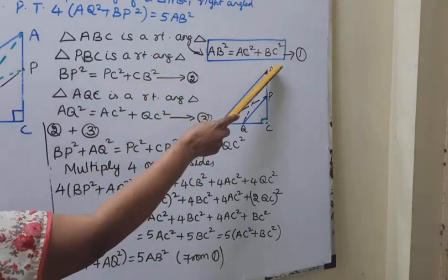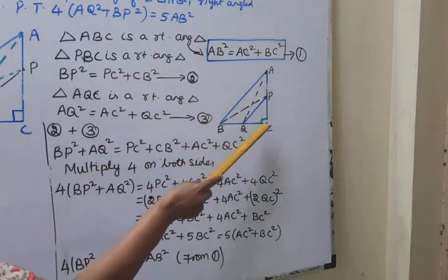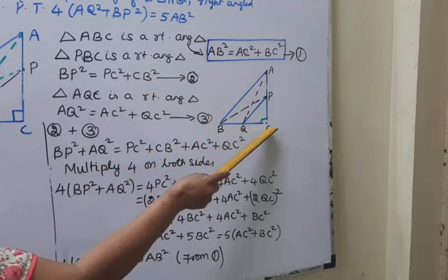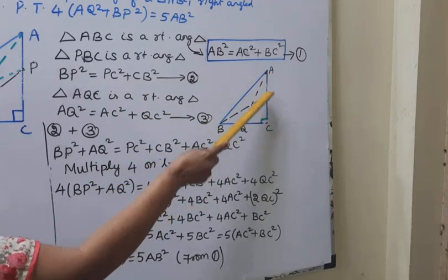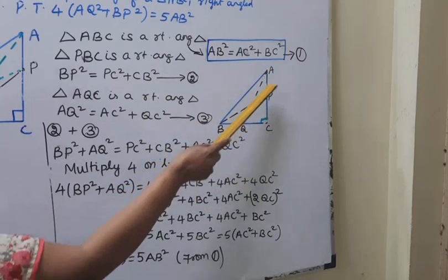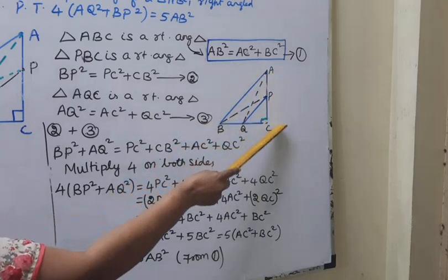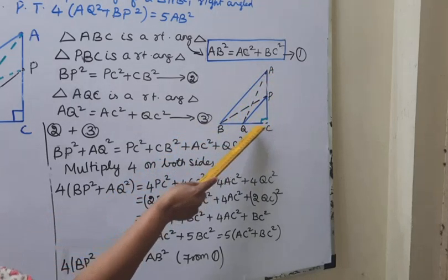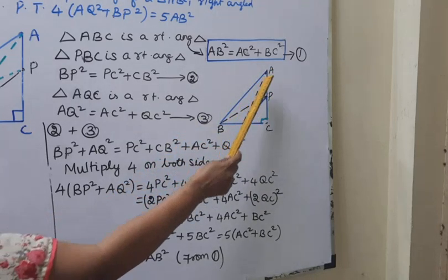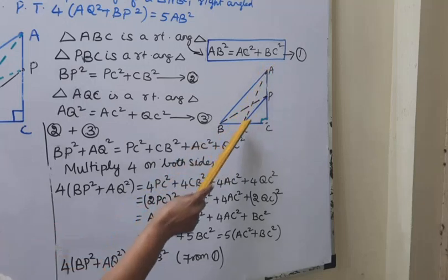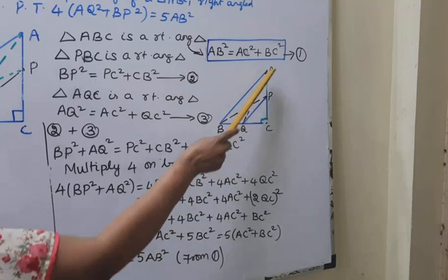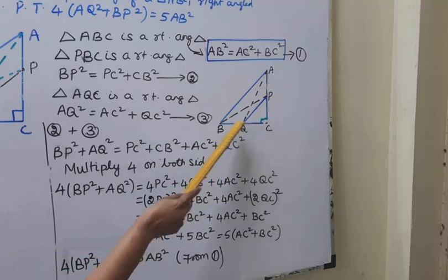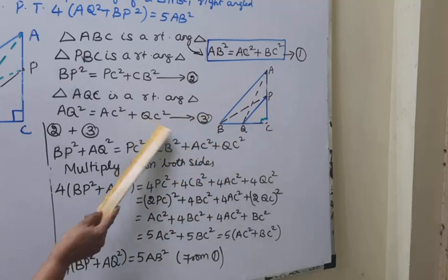Next, consider triangle AQC. AQC is a right angle triangle. Applying Pythagoras theorem: AQ square equal to AC square plus QC square. That is equation 3.